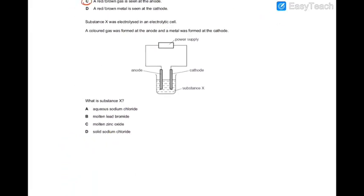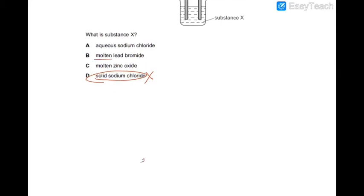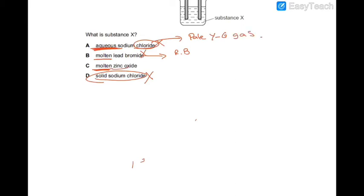Next question: substance X is electrolyzed and at the anode a colorless gas is observed, meaning the non-metal should form a colorless gas. It cannot be solid sodium chloride as that is a non-electrolyte. Molten lead bromide would form a reddish-brown gas, so that's not the answer. Chlorine forms a pale yellowish-green gas, so that's not the answer either. Zinc oxide produces oxygen, which is a colorless gas — so the answer is C.